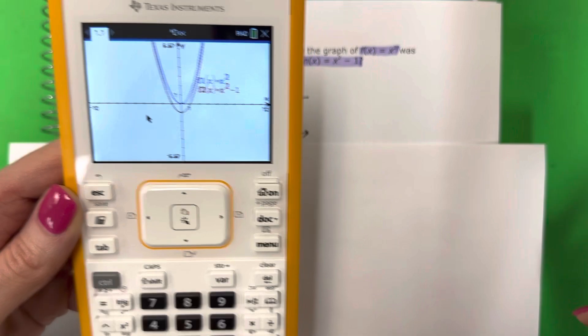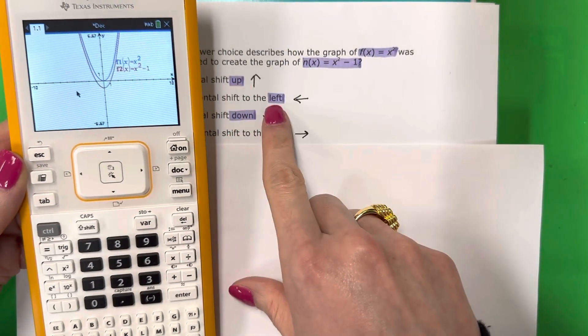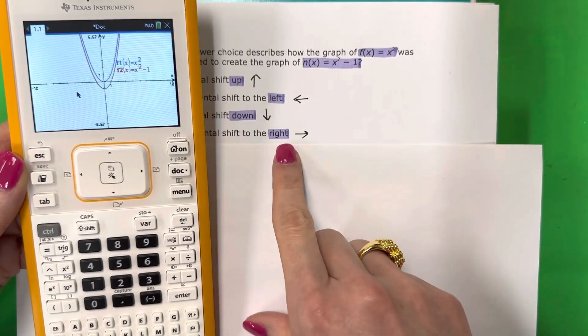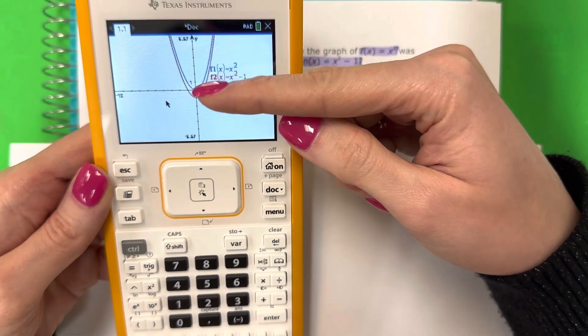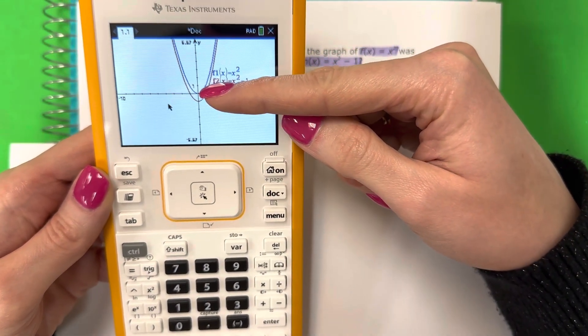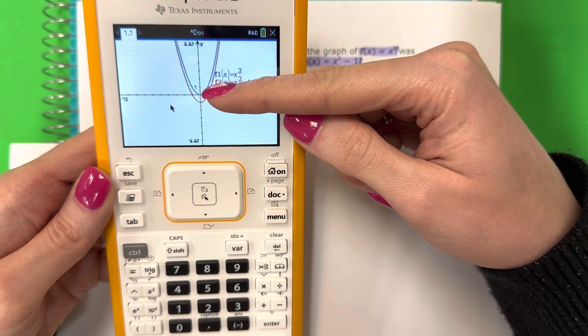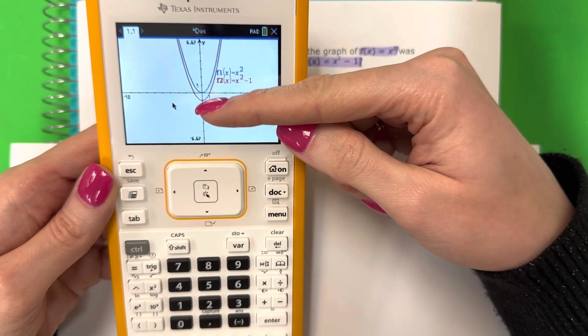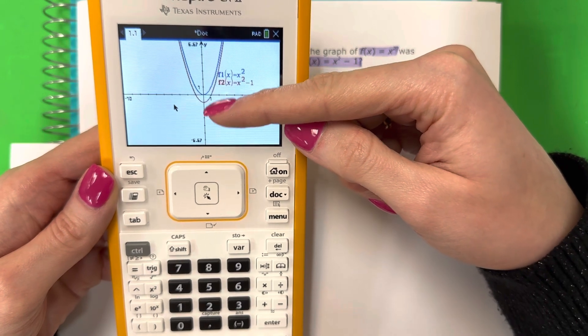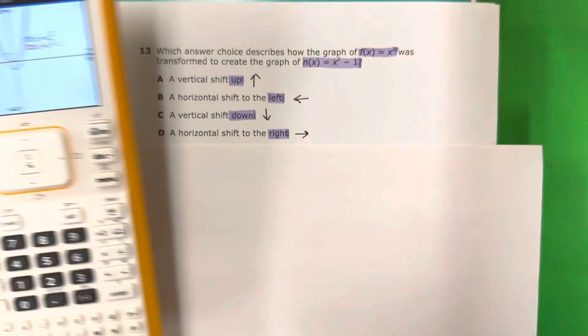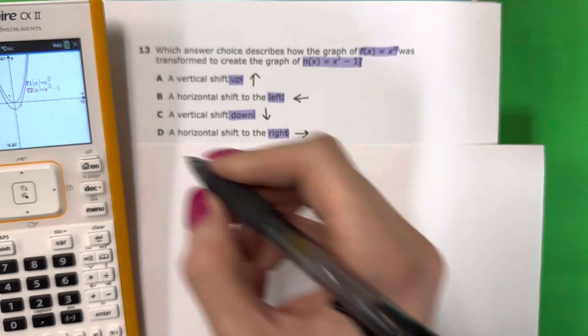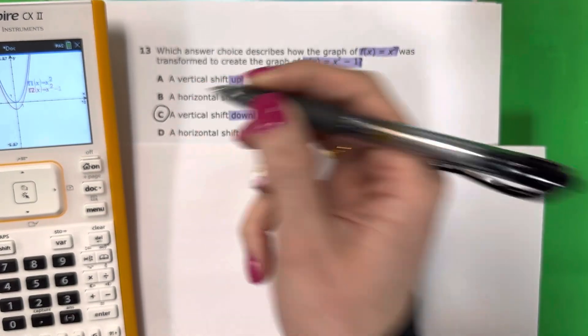So what happened to it? ¿Qué pasa? Did it move up, left, down, or right? Well, it started up here and it went down. Se mueve abajo, right? Because the original is the blue. Porque el original es el azul. And the new one, the red, el nuevo es rojo, is more down. Es más abajo. So what happened? ¿Qué pasa? It moved down. Se mueve abajo.